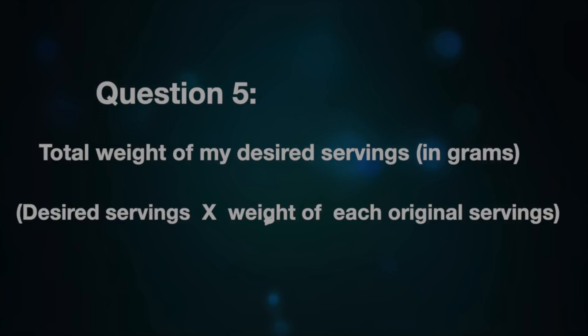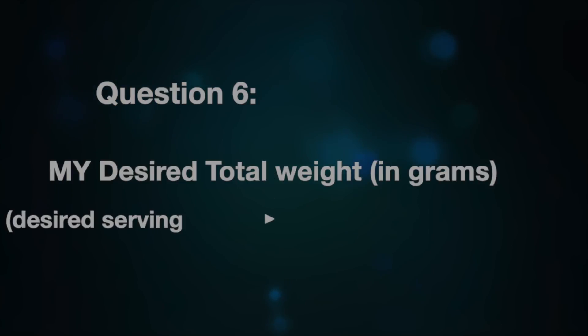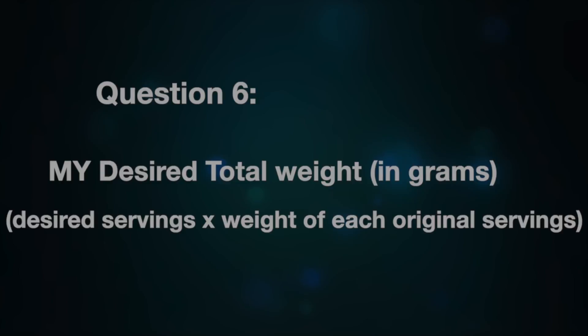That is where your creativity comes in — you decide how many servings you want. After deciding, you find the total weight of your desired servings. So we went from: total weight of the original recipe → number of servings in the original → weight of each serving → how many servings you want. Now, to find your desired total weight, multiply your desired number of servings by the weight of each serving.